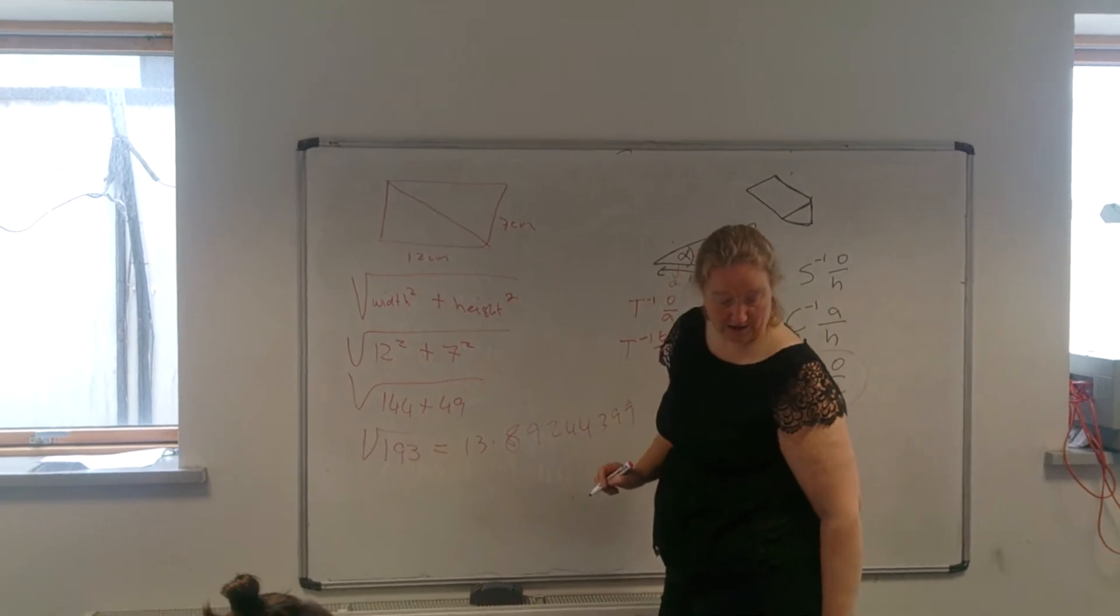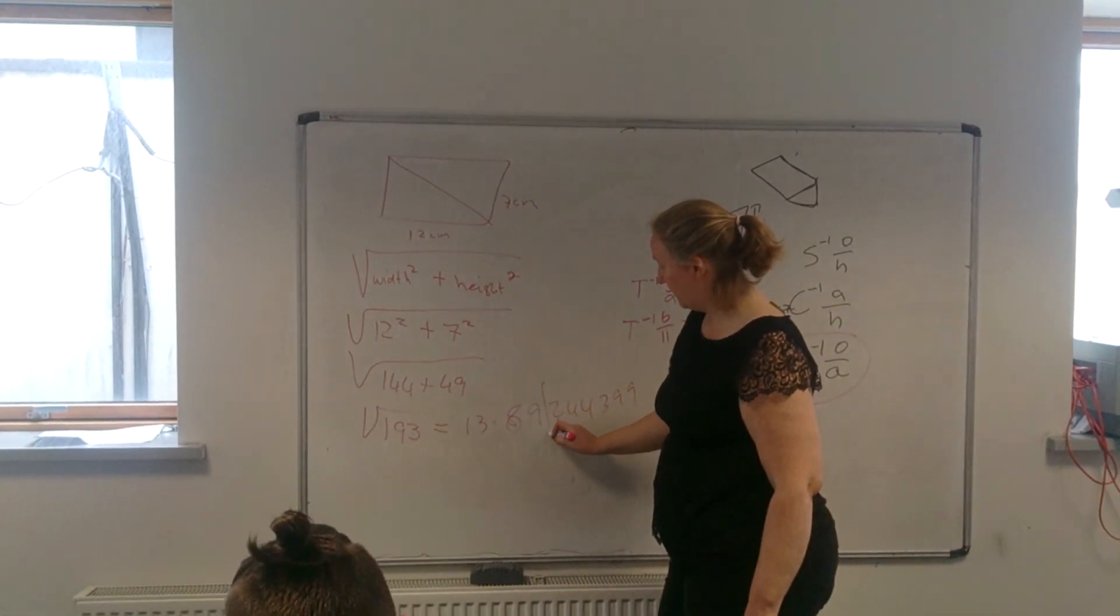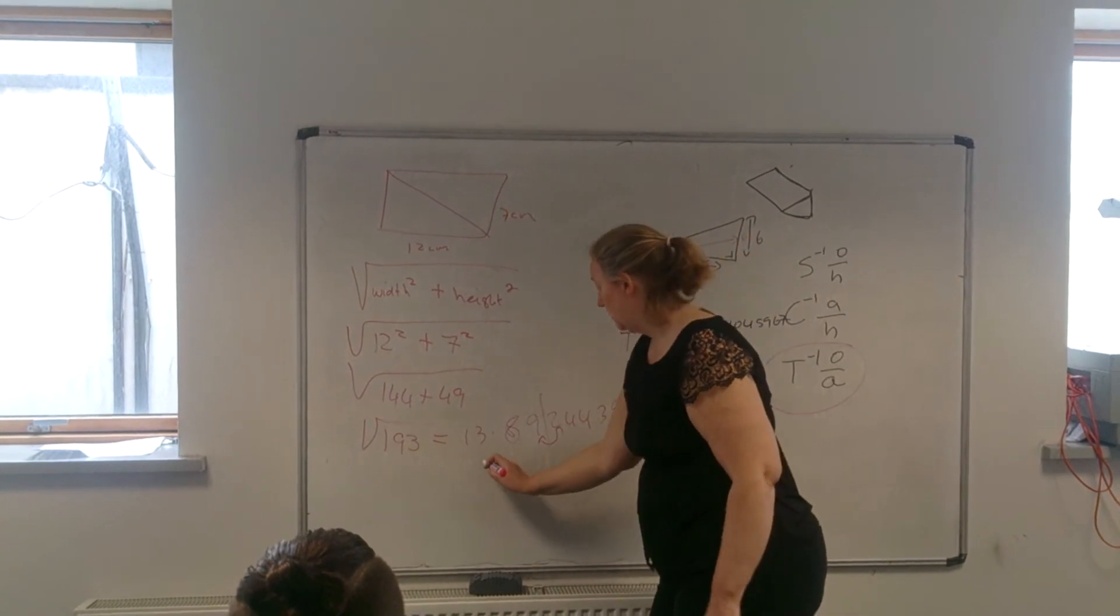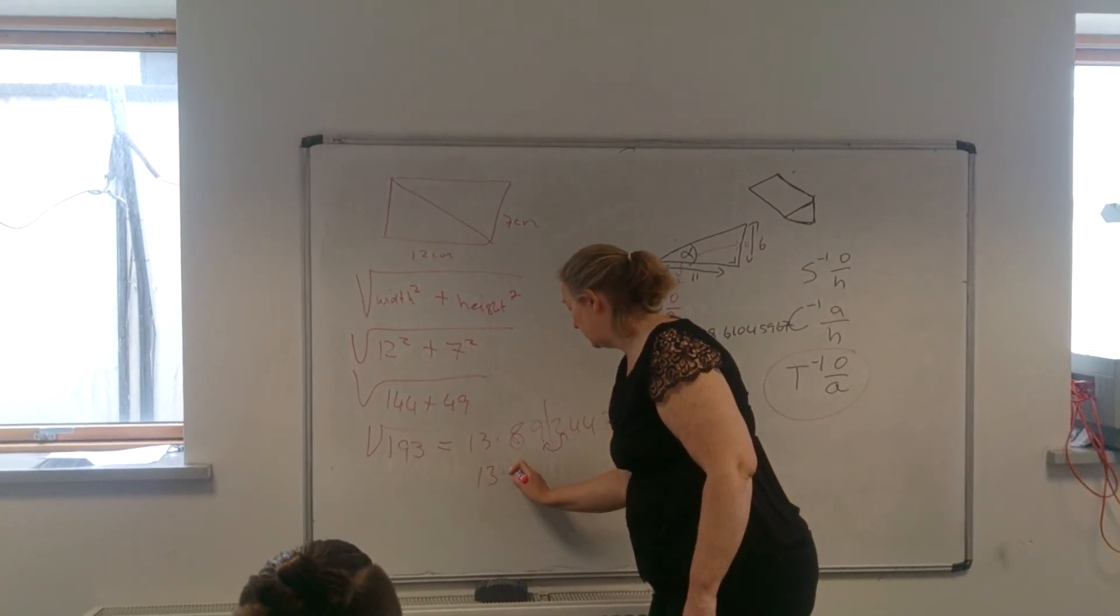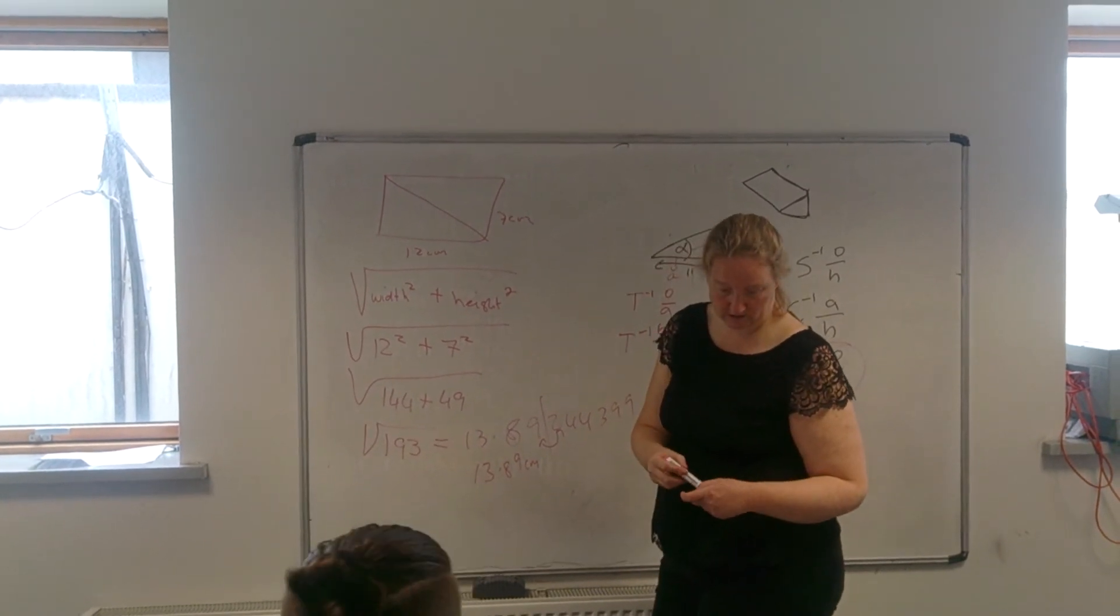And then it says correct to two decimal places, so you want two numbers after the decimal place. That 2 is not going to affect it. So it's 13.89 centimeters. And that's your answer.